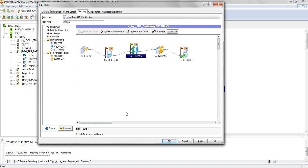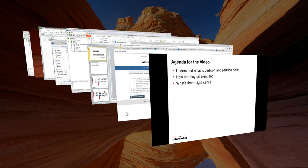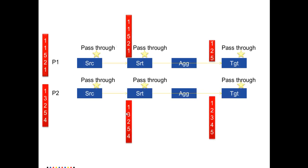But this needs to be understood from another perspective. Consider a mapping with a Source Qualifier, Sort transformation, Aggregator, and Target — the same as what we saw. There are two partitions: the first partition carries records in the red block (1, 1, 5, 2, 1) and the second partition has (1, 3, 2, 5, 4). The Aggregator transformation has the sorted input condition enabled, so it expects data to arrive in sorted order.